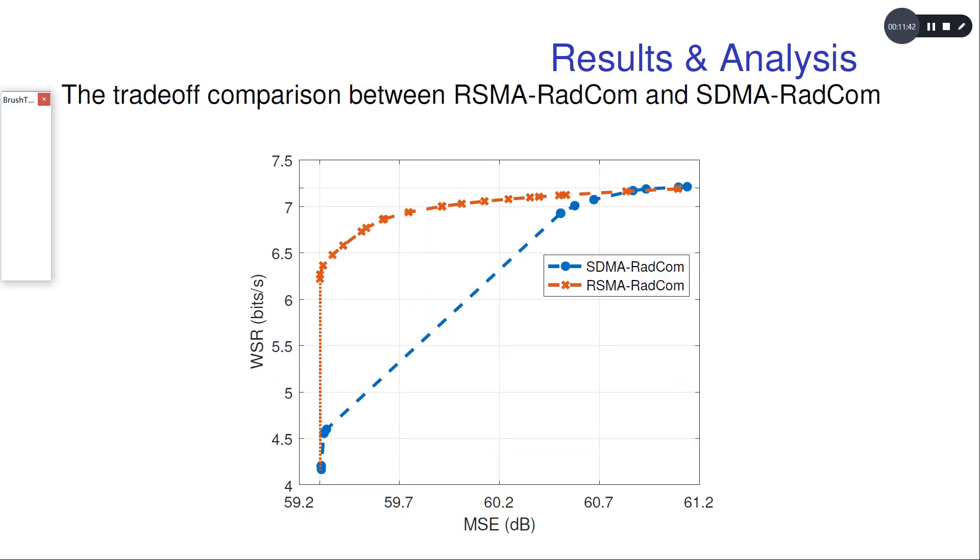To provide a convincing comparison between RSMA RadCom and SDMA RadCom, we vary the regularization parameter lambda to get the trade-off of both systems between the communication metric WSR and the radar metric beam pattern approximation MSE.